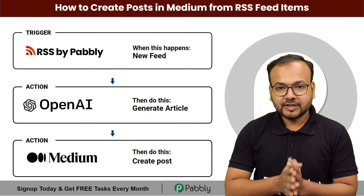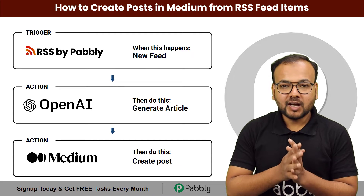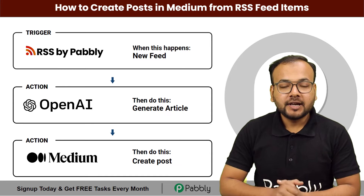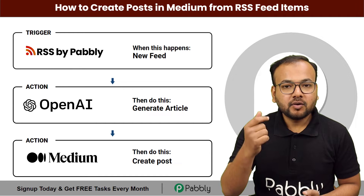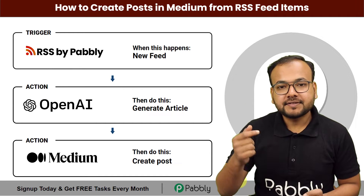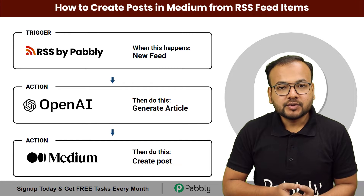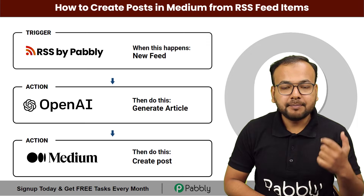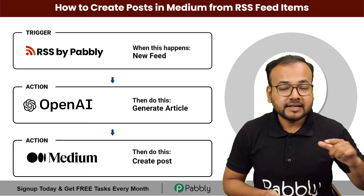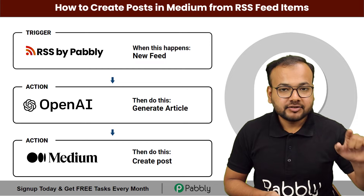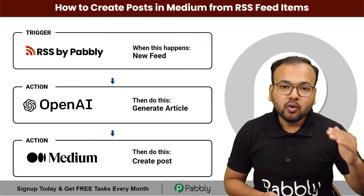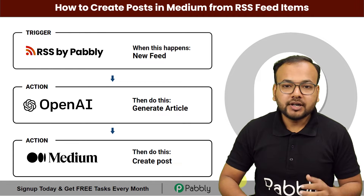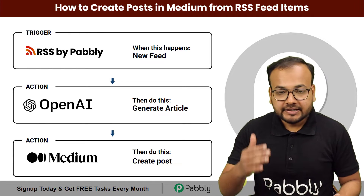Welcome to Pabbly. In this video, you will learn how you can automatically create posts in medium.com directly and automatically from RSS feeds of any website. For setting up this automation, we are going to use the RSS by Pabbly feature of Pabbly Connect inside the trigger step, and OpenAI, which is an artificial intelligence based content generator, in the action step.